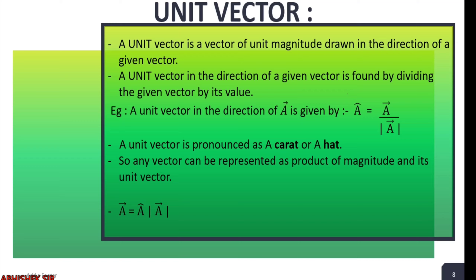To find the unit vector, you just have to divide the given vector by its magnitude — we write that in modulus. So the unit vector of A, represented by this symbol, is equal to the original vector divided by its modulus. This specific symbol is pronounced as 'a carat' or 'a hat'.